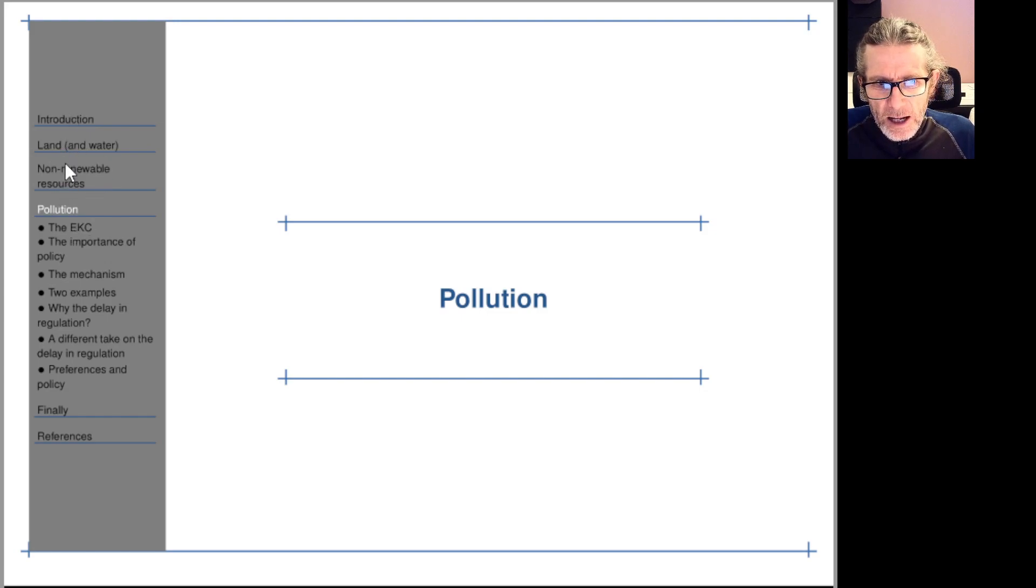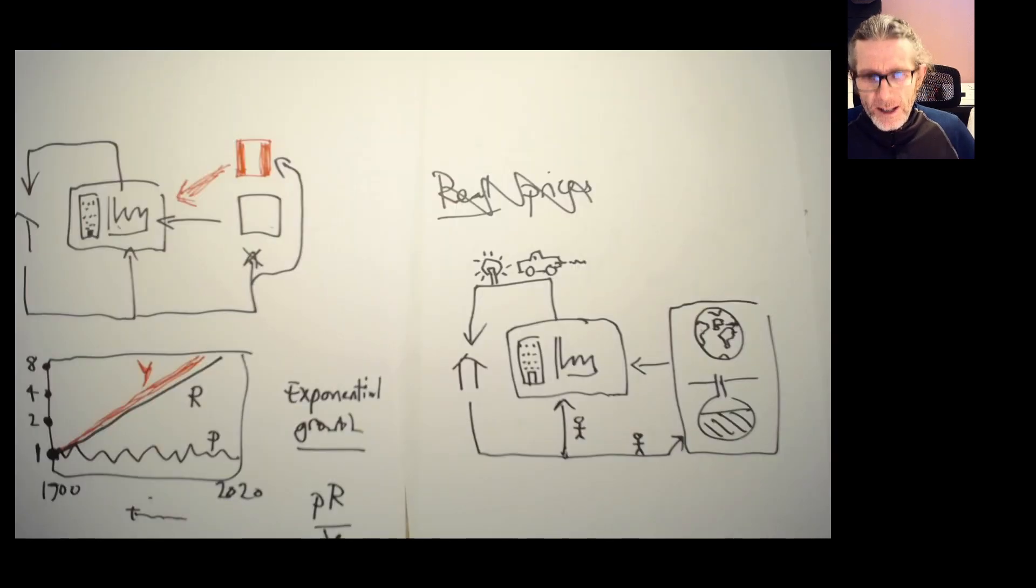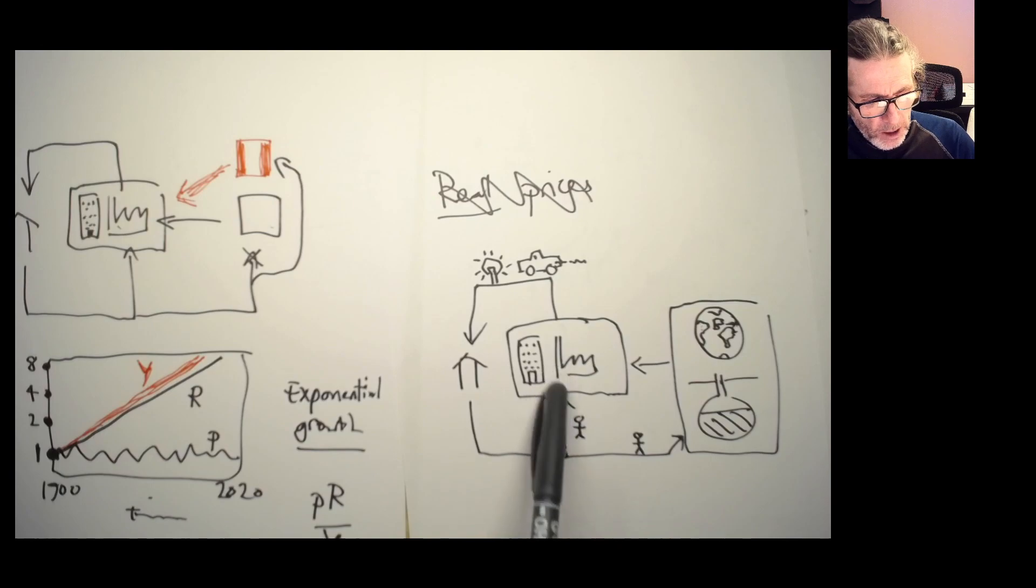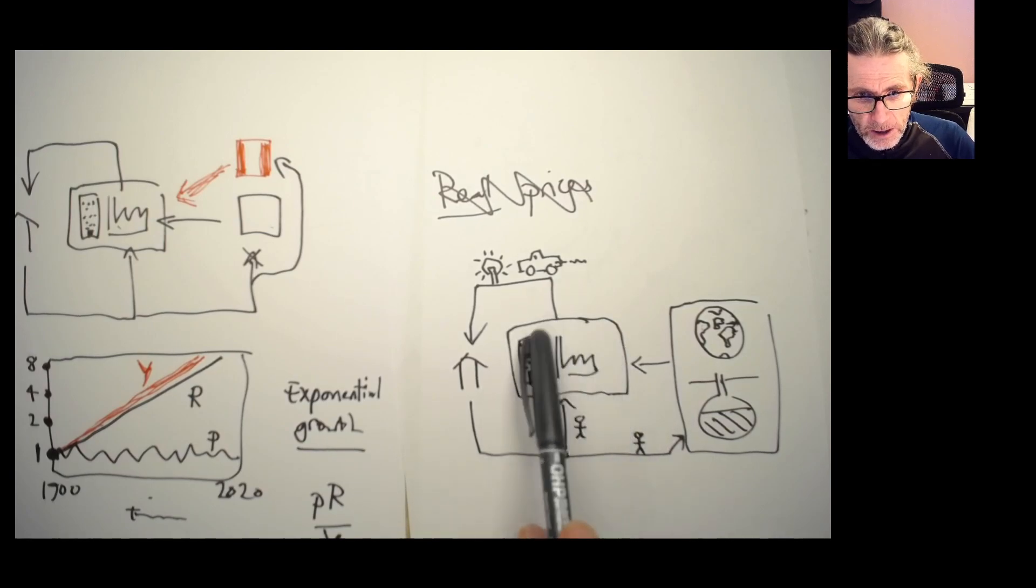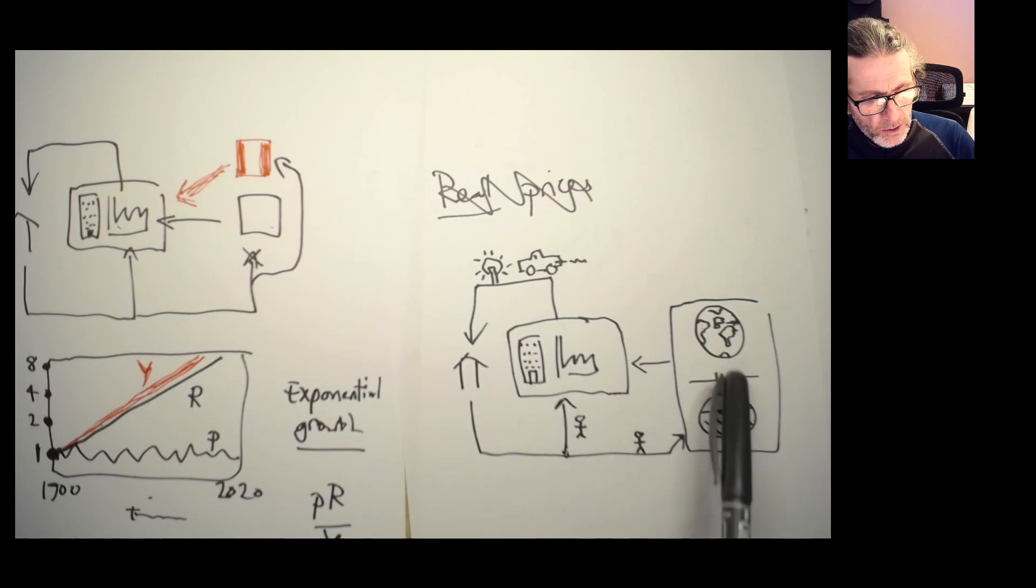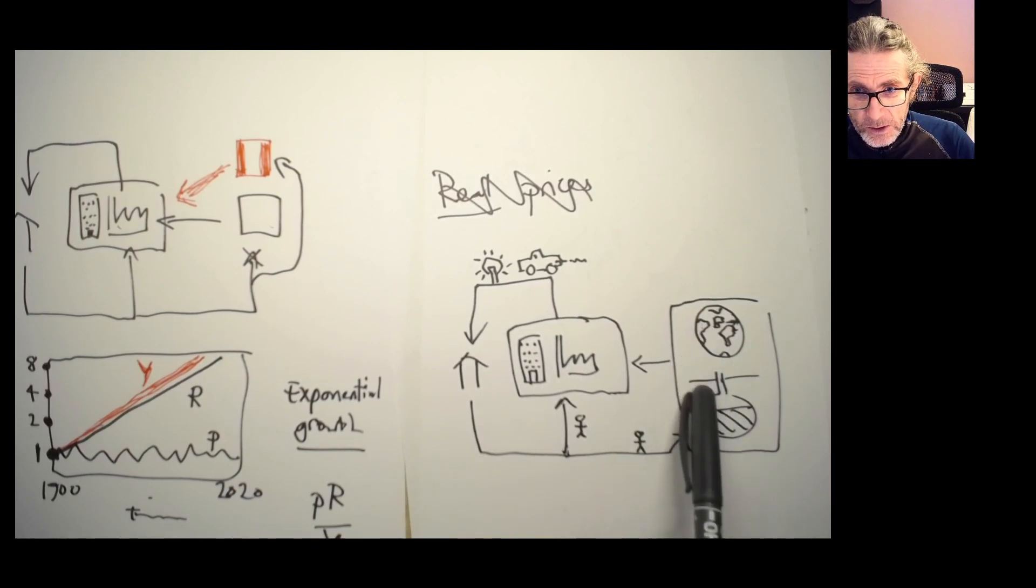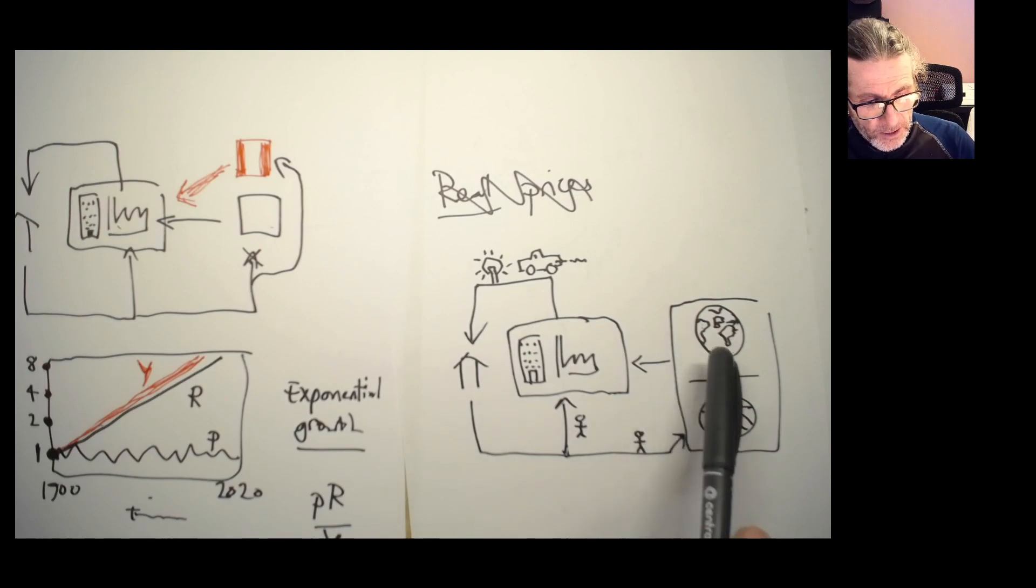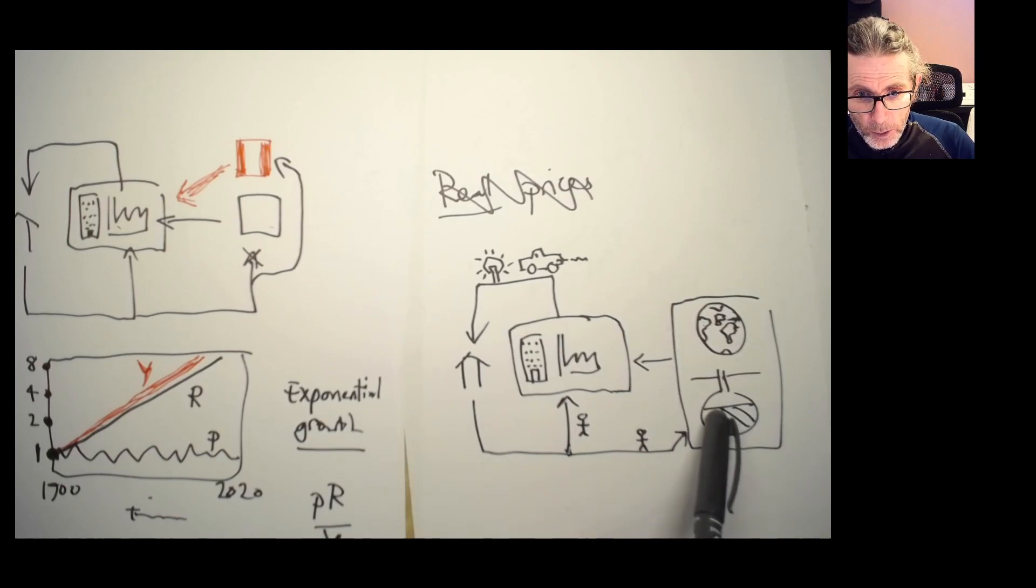Land and non-renewable resources. I've got this picture. Familiar structure: households, people heading off to work. Most of them are working in the final goods sector. Some are working in these natural resource intensive sectors. This is land, this is non-renewables.